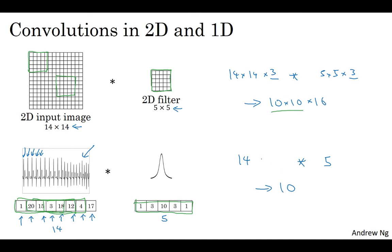If you have multiple channels, you might have 14 by 1 in this case. An EKG is just one channel if you have one lead or one electrode for the EKG, so times 5 by 1. If you have 16 filters, maybe you end up with 10 by 16. This could be one layer of your ConvNet. For the next layer of your ConvNet, if you input a 10 by 16 dimensional input and convolve that with a 5 dimensional filter again, then this needs to have 16 channels, so that has to match. If you have 32 filters, then the output after another layer would be 6 by 32.